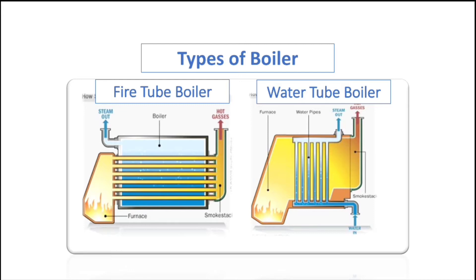The marine steam boiler has two different types of construction. The fire tube boilers are the most common type of boiler used on board ships, and the second type is the water tube boilers, which are mostly used for higher steam production. Although they are made for the same purpose — to produce steam — they are designed depending on the steam demands and quality needed to supply a steam distribution system.